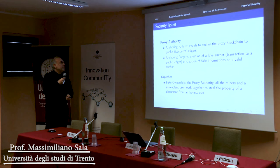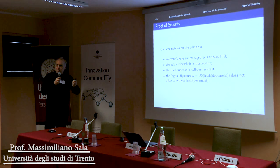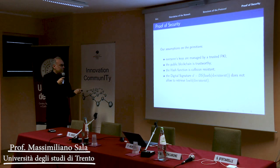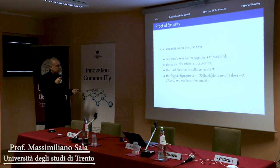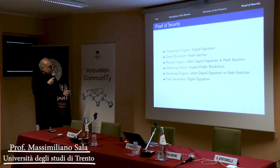For all of this, we provide security proofs in the formal sense. We need the assumption of the primitives: we need to distribute keys to all actors, so we need to trust the PKI, which is separate from the authorities. We have to trust the public blockchains we are using. We need the hash function to be collision resistant — for some scenarios, second preimage resistance is enough. And we need something less common: the digital signature must not allow retrieval of the hash of the document.